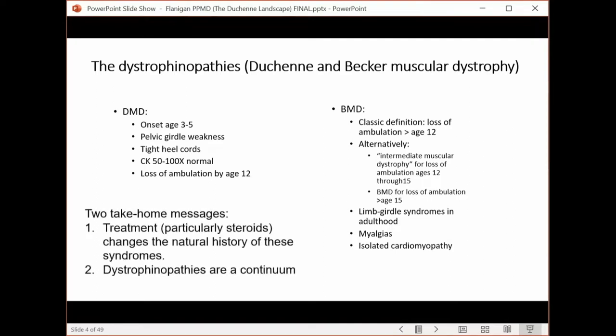There are two take-home messages that are important in looking at a list like this. The first is that treatment in the modern era, particularly with steroids, has changed the natural history of these syndromes. And more importantly perhaps, is that the dystrophinopathies are a continuum of disorders. If we say someone looks like a typical Duchenne or a moderately severe Becker, it means something, but they're all related to problems in the dystrophin gene.